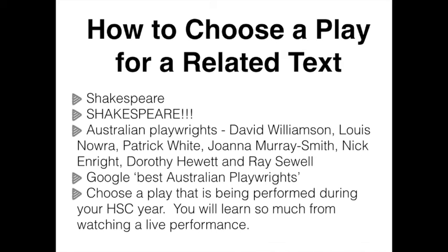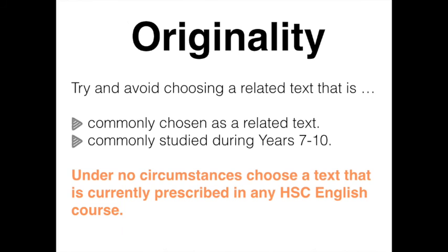Plays are meant to be watched, not read, so try and choose a play that is being performed during your HSC year. As you're watching the play, think about the decisions that the director has made that shape your experience of discovery as a member of the audience. Try and make sure that you make your related text original — this means avoid choosing texts that are commonly chosen as related texts or commonly studied during years 7 to 10. Remember, if in doubt, ask your teacher. Under no circumstances choose a text that is currently prescribed in any HSC English course — this is easy to check out, so make sure you do.